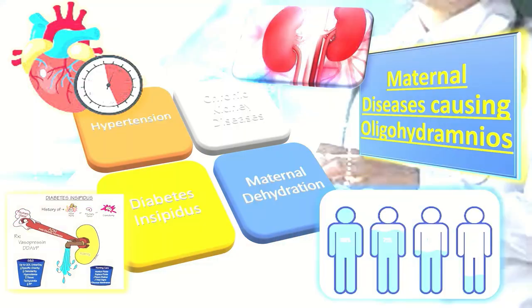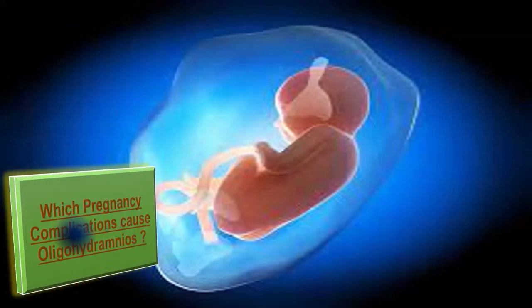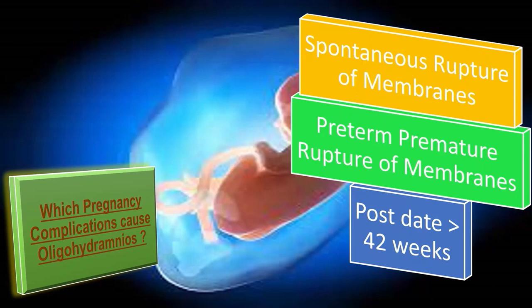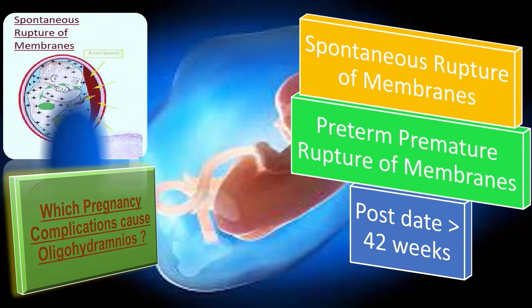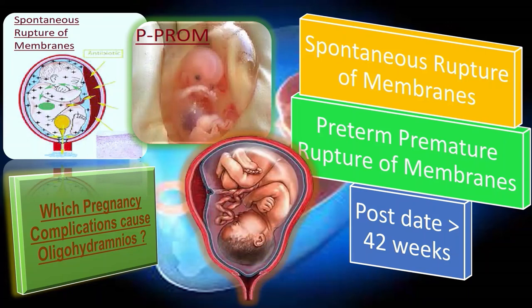The pregnancy complications responsible for oligohydramnios include three conditions: first, spontaneous rupture of membranes; second, preterm premature rupture of membranes; and third, post-date pregnancy — meaning more than 42 weeks of gestation.